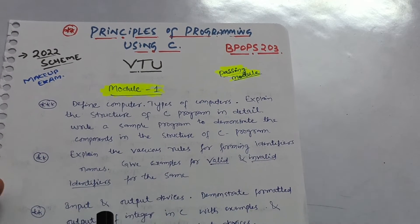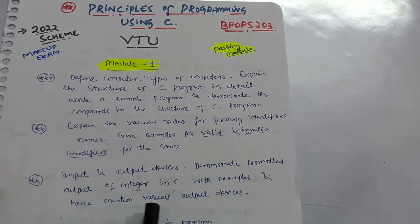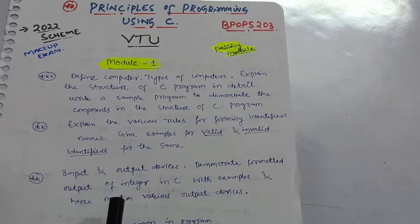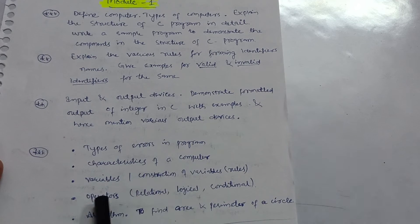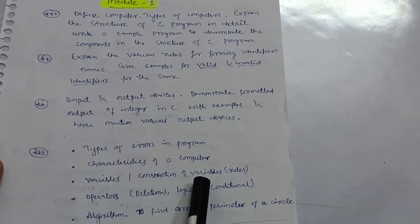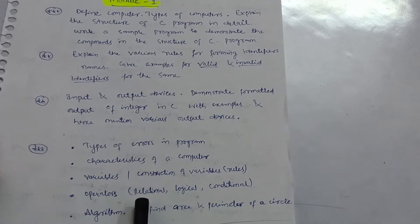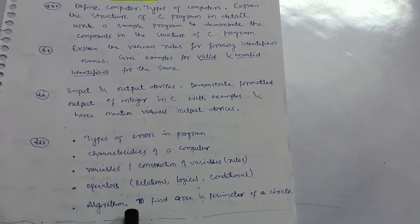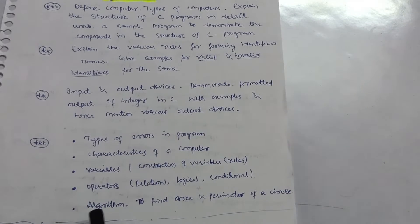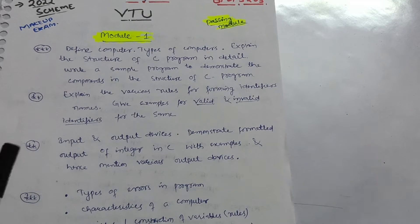Next in Module 1: input and output devices, demonstrate formatted output of integers in C with examples, and mention various output devices. You should also cover types of errors in a program, characteristics of a computer, variables and rules for construction of variables, and operators — including relational, logical, and conditional operators. Also cover algorithms, for example writing an algorithm to find the area and perimeter of a circle. You should cover this module fully to not lose 20 marks.